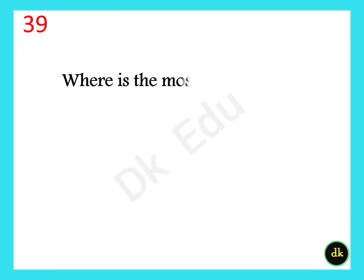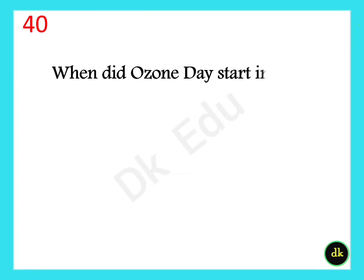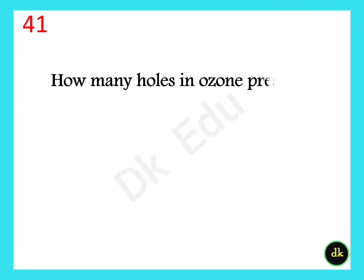Where is most ozone located? In the stratosphere, which is 10 to 50 kilometres above Earth's surface. When did Ozone Day start in India? On September 16th, 1984. How many holes in the ozone layer are present in the world? Only one hole.